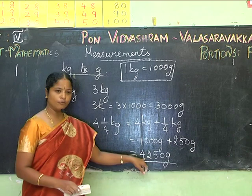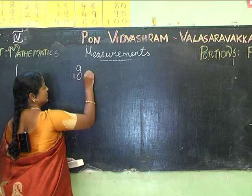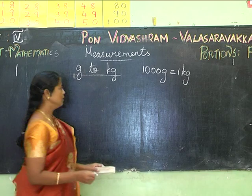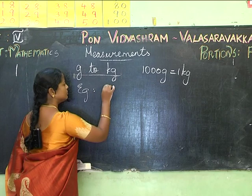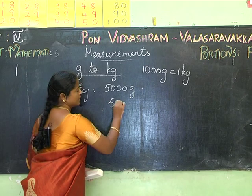Now we shall see conversion from grams to kg. 1000 grams equals 1 kg. Example: 5000 grams. According to the formula, 5000 can be written as 5 × 1000, so 5000 grams equals 5 kg.